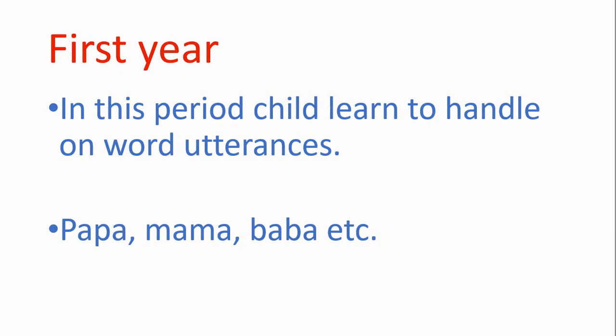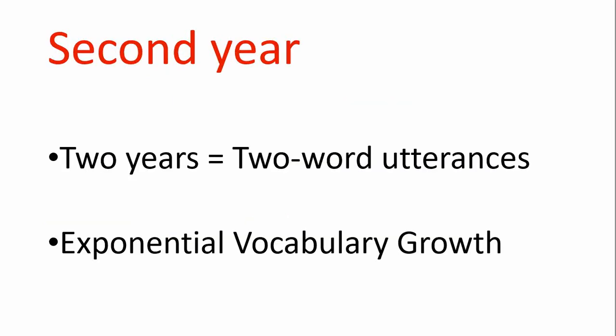During the first year, the child learns to handle one-word utterances — uttering one-word sentences like 'papa,' 'mama,' 'baba,' and similar words. In the second year, the child progresses to two-word utterances, and some exponential vocabulary growth begins to occur. The child's vocabulary is greatly enhanced during the second year — he is listening, uttering two-word combinations, receiving new words, thinking, and observing the surrounding environment.